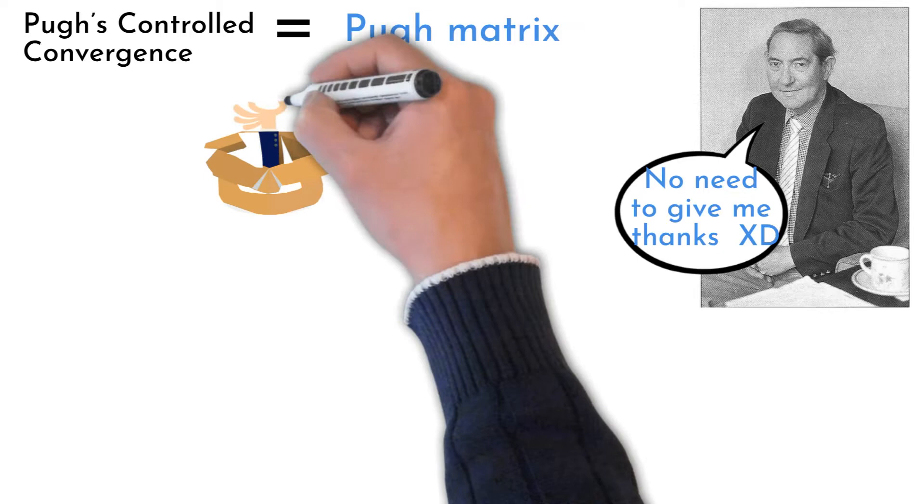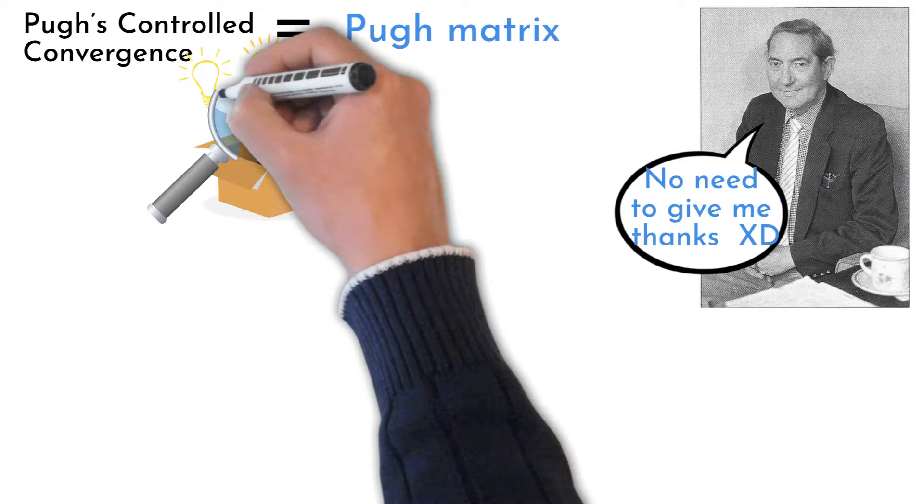Pugh Matrix helps to select one or more improvement opportunities with a weight of chosen important criteria by comparison with current situation, current process.